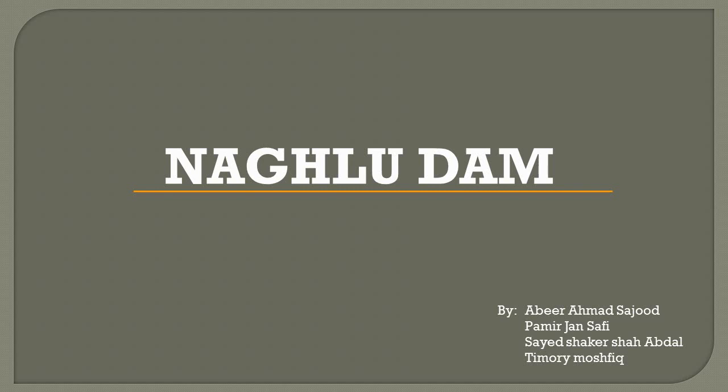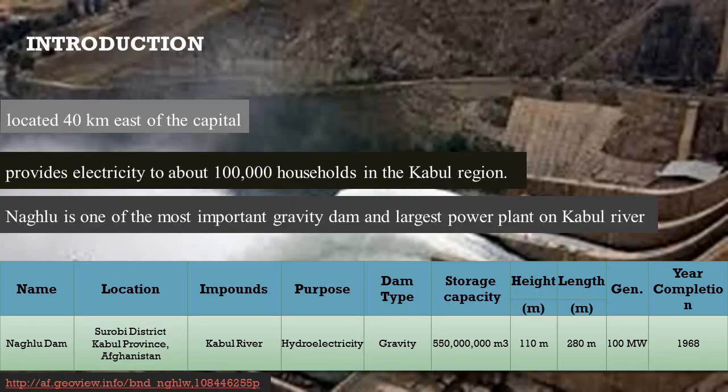Naghlu Dam in Afghanistan. Naghlu Dam is one of the most important gravity water reservoir as well as power plant in Afghanistan. It produces electricity for 100,000 households for the Kabul region, including the Jalalabad city. It is located 40 kilometers east of the Kabul city.